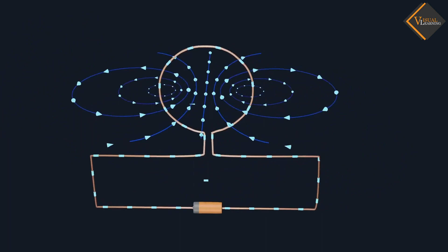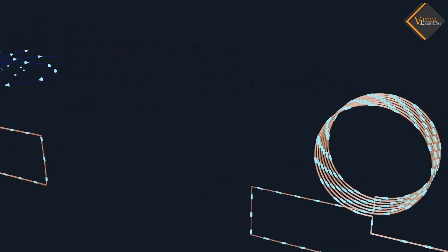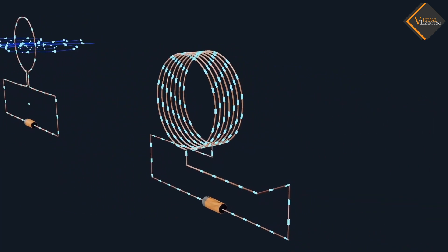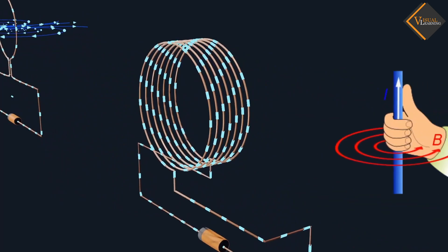Now, if we want to check direction of magnetic field lines in every section of the wire, we can apply right hand thumb rule.